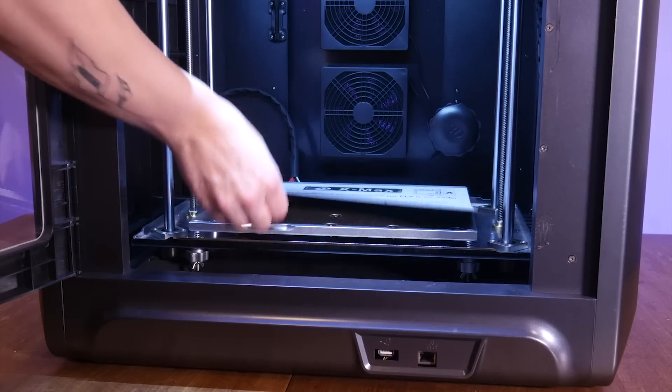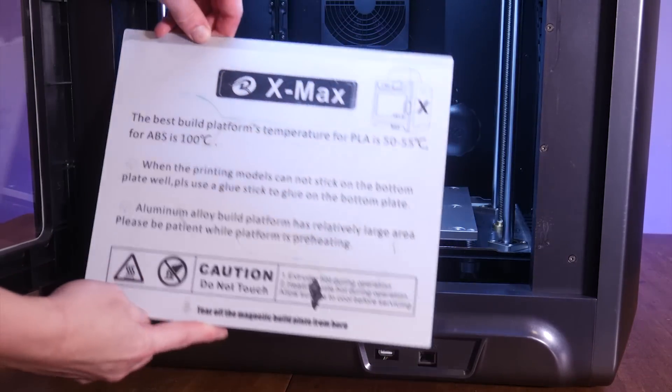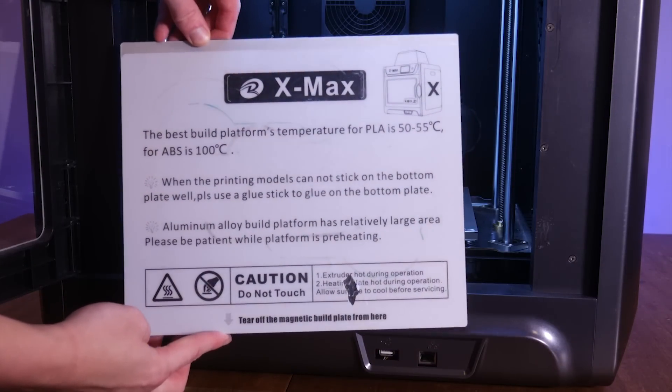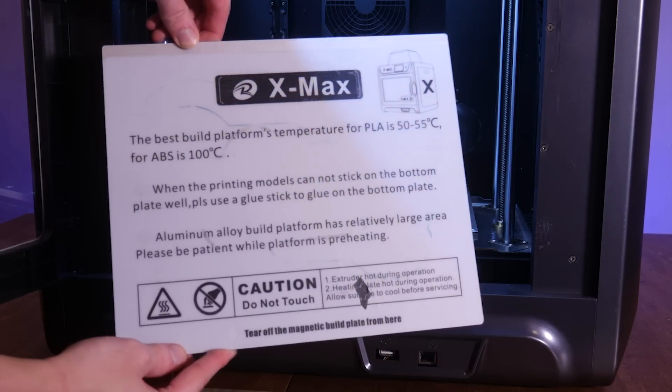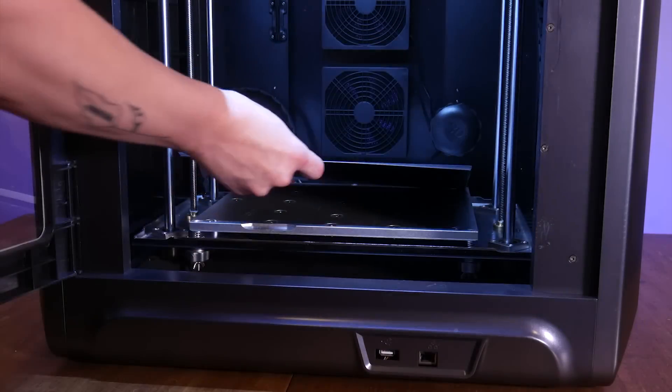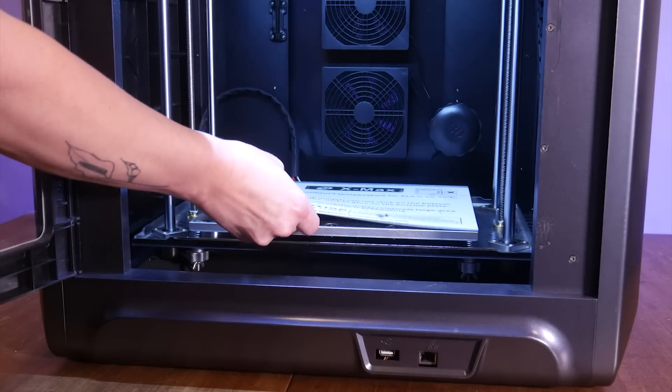One thing about the bed you may have noticed, which is my first nitpicky con, the instructions for bed leveling and use of the machine are printed right on the build plate itself. Sort of an eyesore in my opinion, and I think that sort of literature is best kept in the manual.